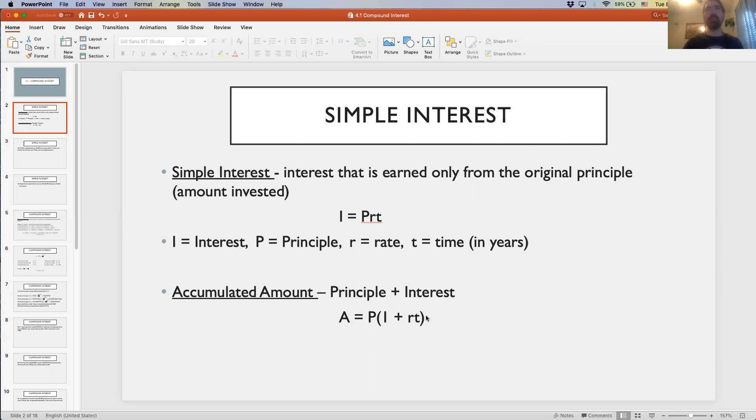This formula is easy to arrive at. It's not just some letters that we're pulling out of space here. If we consider that the accumulated amount is principal plus interest, we can then use the formula for the interest to arrive at this formula.